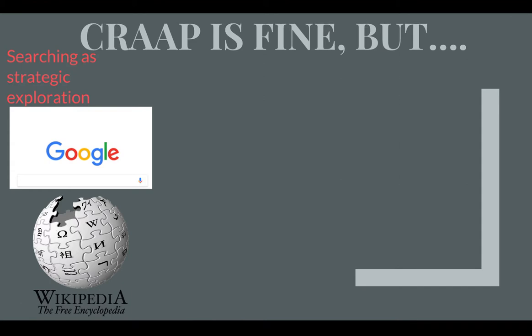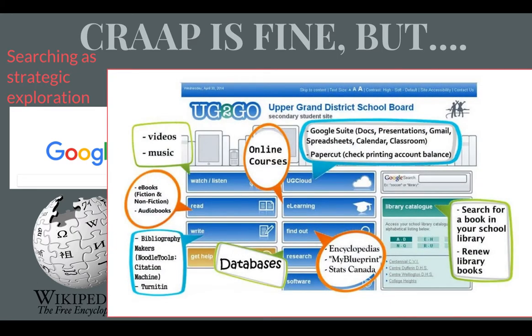Remember that searching now needs to be strategic. You can continue to use Google searches, even though they're biased by what you last bought on Amazon. You can go to Wikipedia — it's a great starting point — but remember that people contributing to Wikipedia pages almost always have their own bias; they're in love with the topic and curating based on work they've already been doing. In the ODSS Learning Commons we've done a lot of that work for you — head into UG2Go for amazing digital resources to start being strategic in your searching.